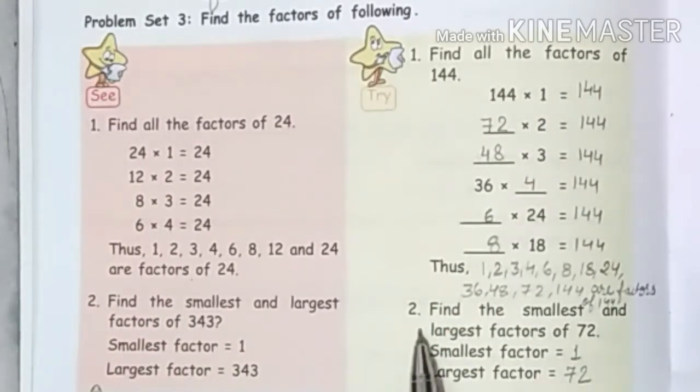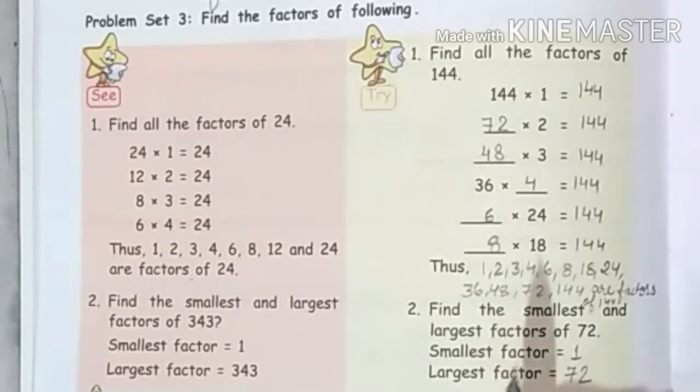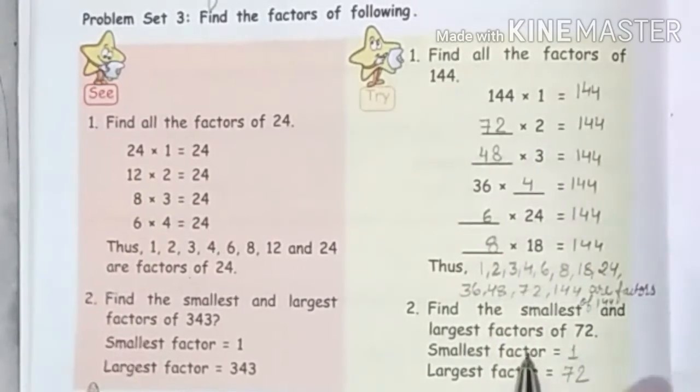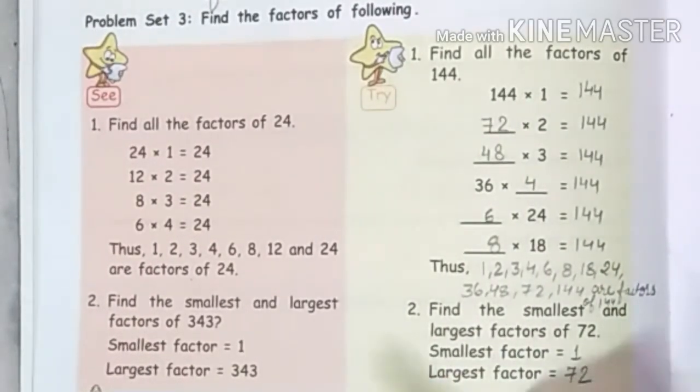Question number 2: Find the smallest and the largest factor of 72. So the smallest factor is 1. And the largest factor is 72.